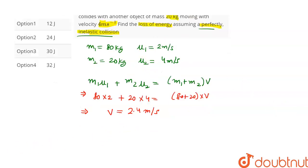We have to find the loss in energy, and let the loss in energy be KE dash. It will be equal to initial kinetic energy KE1 minus the final kinetic energy KE2.